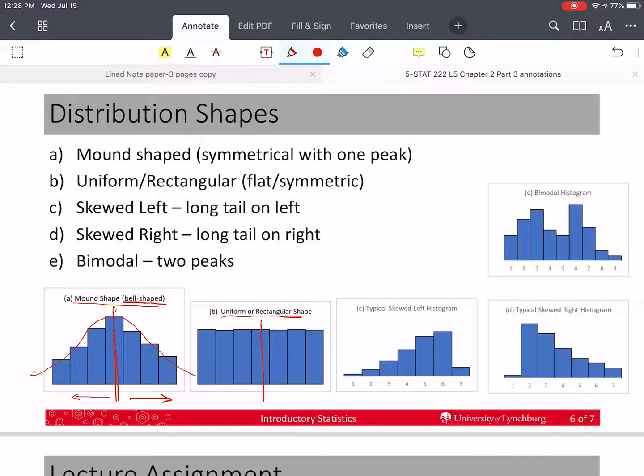Now, this other shape is in C, is what we call skewed left, or skewed to the left histogram. So the reason is that if I look at this, and I compare it to the bell shape or symmetric mound shape curve, it looks like I've taken this left tail over here, and I've grabbed it, and I've stretched it in that direction.